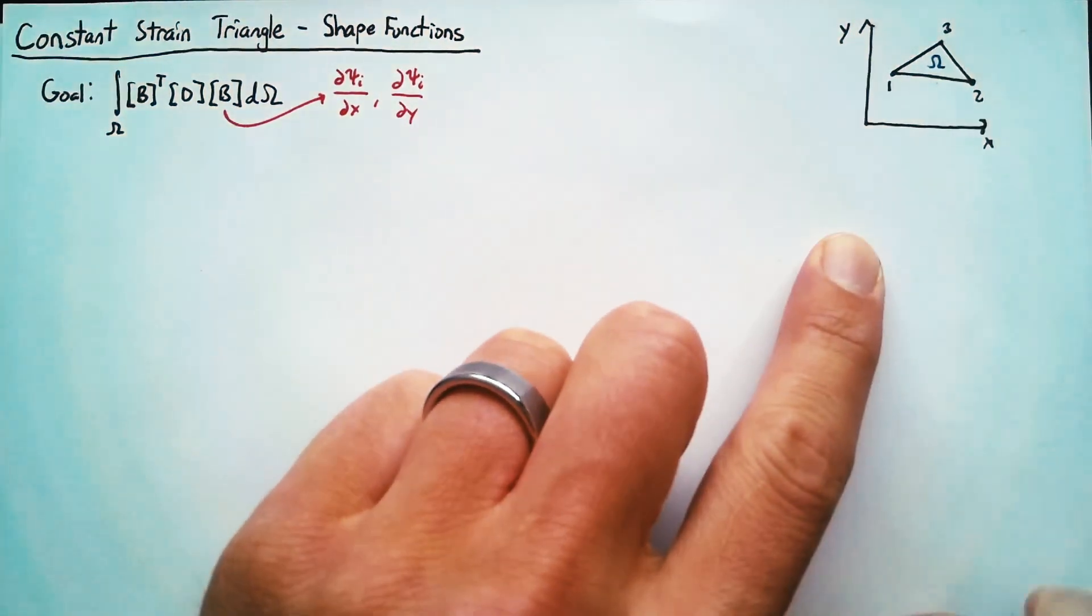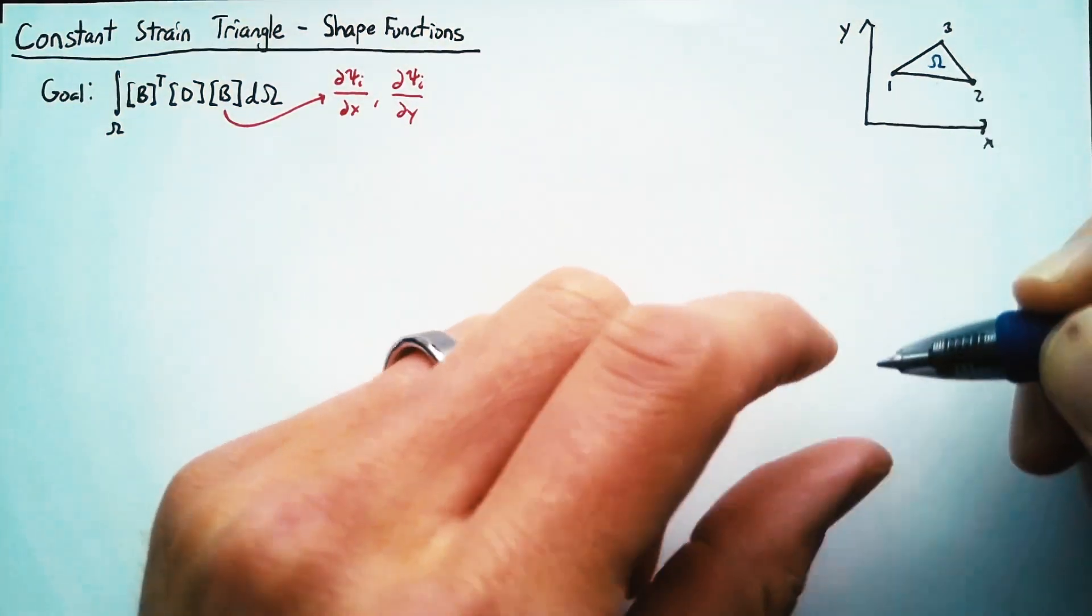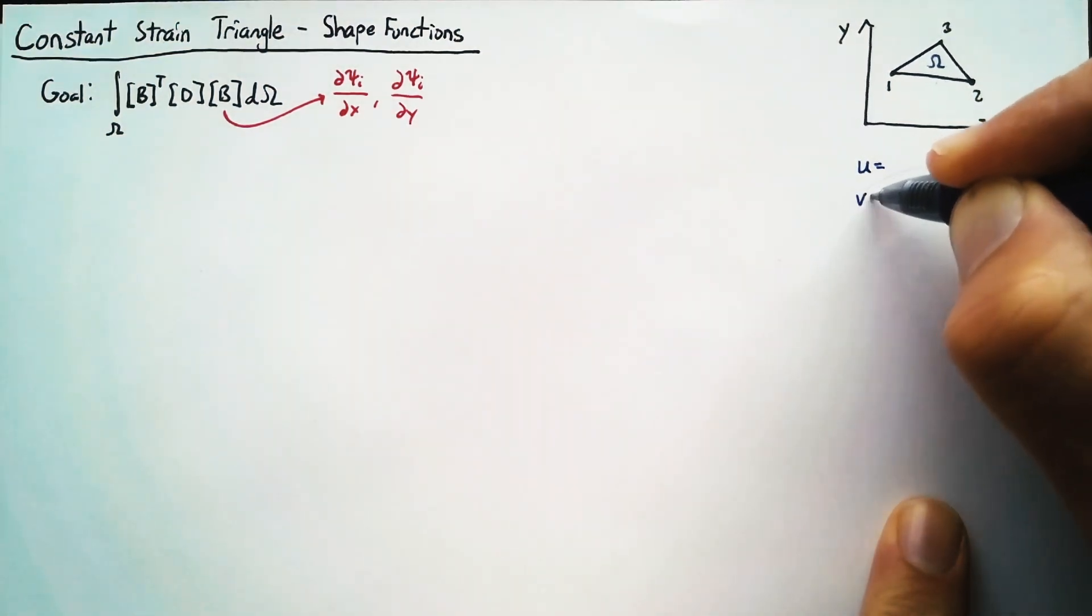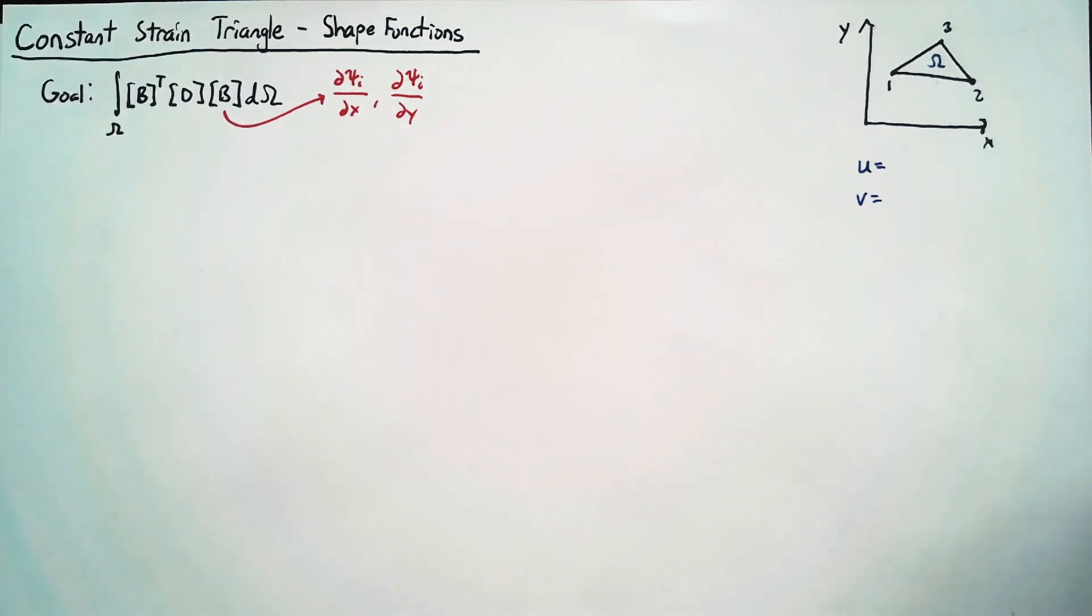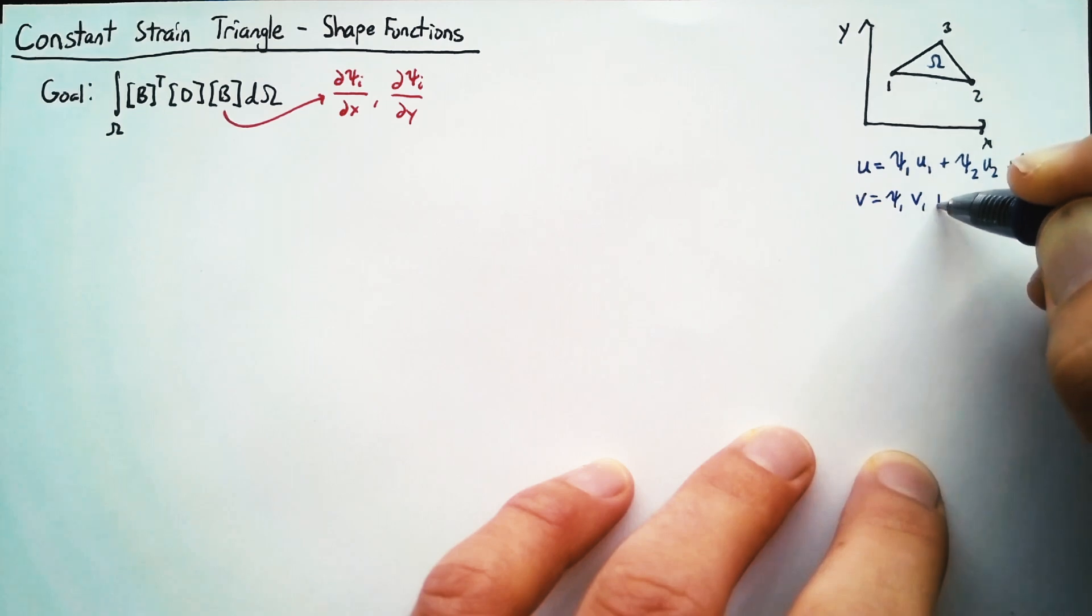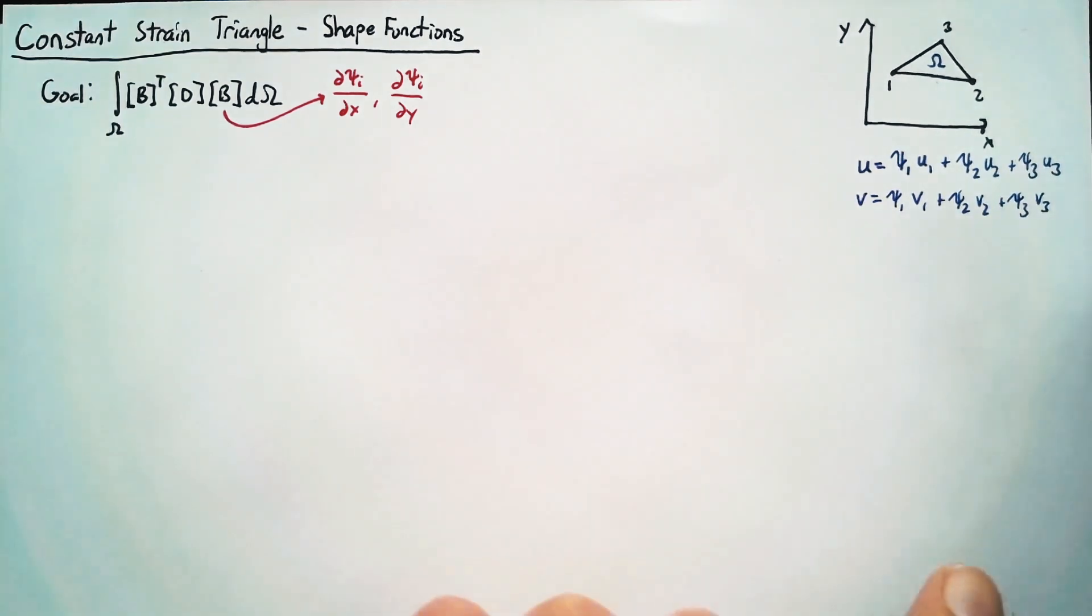So just as we have for all of our one-dimensional elements, we are going to define our u and v as sums of our shape functions multiplied by our nodal displacements. The issue here is that it's somewhat difficult to define a shape function in a consistent way on this element, which could be oriented in any way in space.